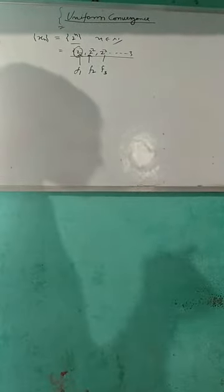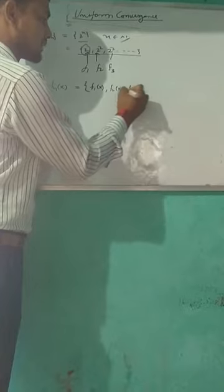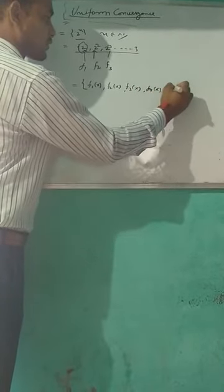If you want the convergence of such a sequence in which all the points are functions, then the convergence of that sequence is covered under the topic of uniform convergence. Suppose we think about a sequence fnx, where n is a natural number starting from 1 to infinity. Then the elements of the sequence are f1x, f2x, f3x, f4x, and so on. All the points of the sequence are functions.